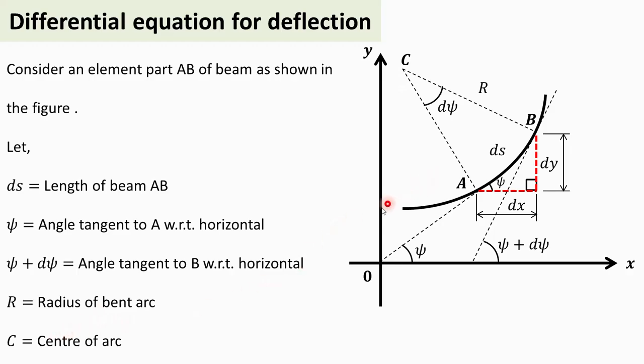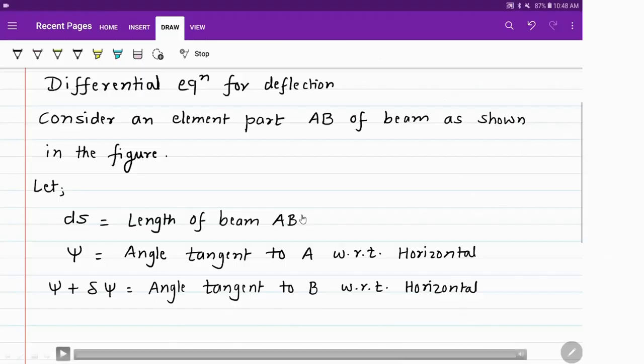To summarize the notation: ds is the length of beam element AB; ψ is the angle of the tangent at A with respect to horizontal; ψ + dψ is the angle of the tangent at B with respect to horizontal; R is the radius of the bent curve; and C is the center of the arc. We now derive the differential equation for the deflection of the beam.